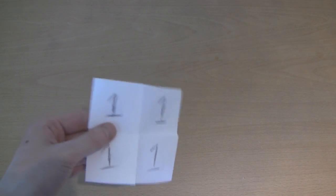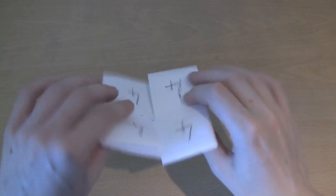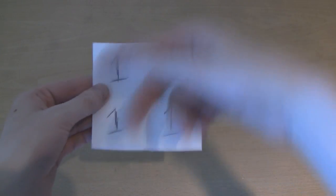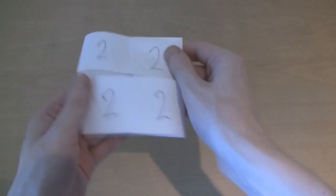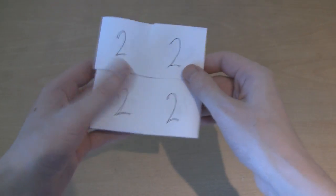So today I'm going to be showing you how to make a cyclic hexatetraflexagon. Let me show you. It's this little toy here. We've got number one on the outside, but I can turn this inside out and reveal number two hidden underneath.